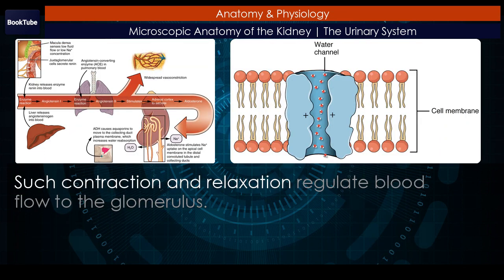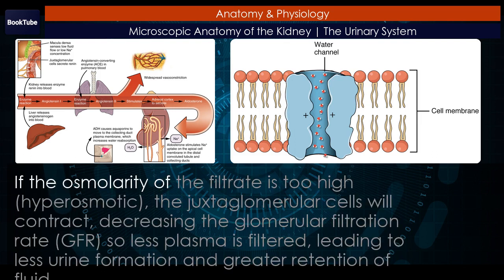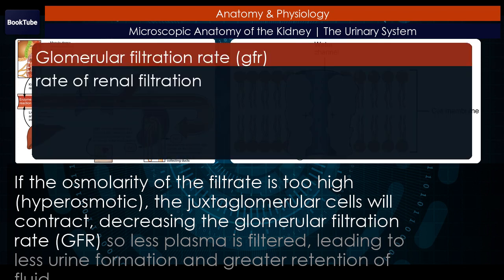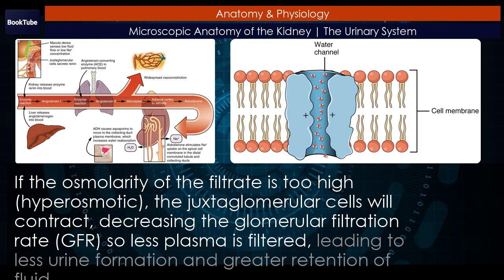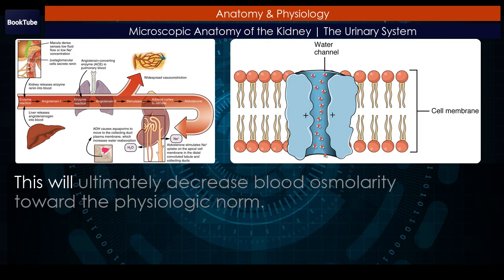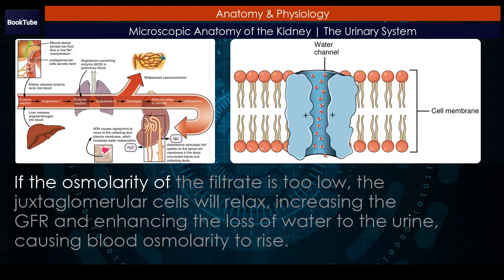Such contraction and relaxation regulate blood flow to the glomerulus. If the osmolarity of the filtrate is too high (hyperosmotic), the juxtaglomerular cells will contract, decreasing the glomerular filtration rate (GFR), so less plasma is filtered, leading to less urine formation and greater retention of fluid. This will ultimately decrease blood osmolarity toward the physiologic norm. If the osmolarity of the filtrate is too low, the juxtaglomerular cells will relax, increasing the GFR and enhancing the loss of water to the urine, causing blood osmolarity to rise.